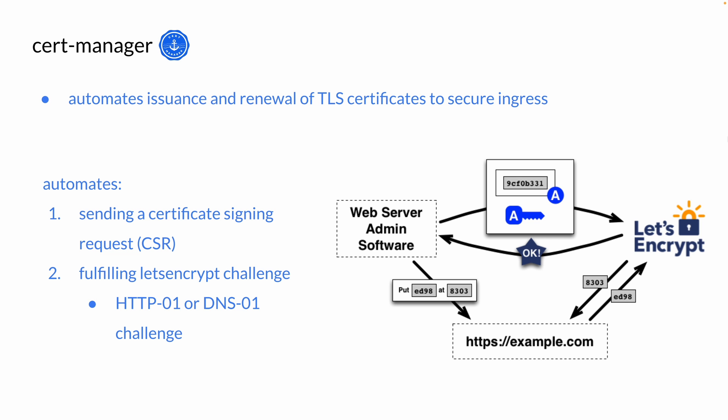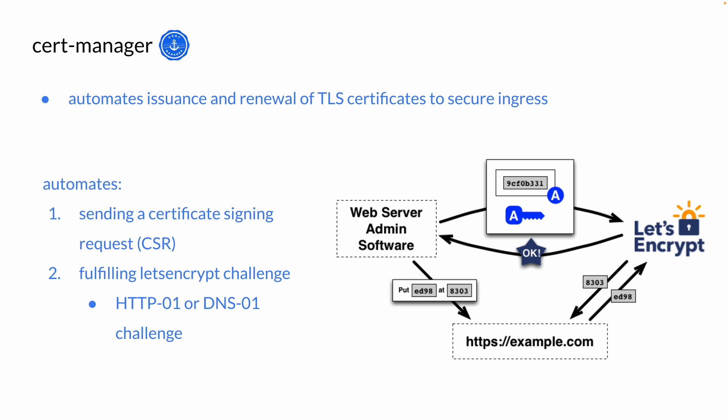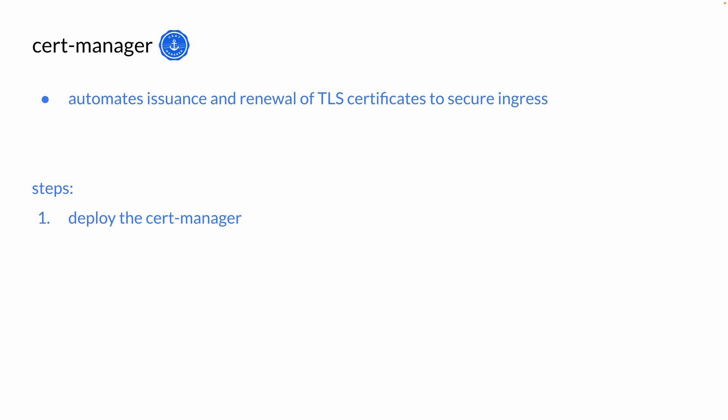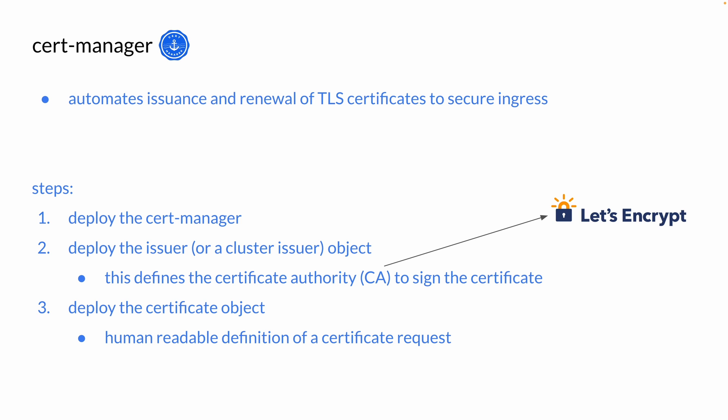Getting a certificate involves sending a certificate signing request to the certificate authority, which is Let's Encrypt in this example. We also have to fulfill the Let's Encrypt challenge. All we have to do is: deploy the cert manager, deploy the issuer object which defines the certificate authority — Let's Encrypt in this case — and lastly deploy the certificate object, which is the actual certificate request in a human-readable format.